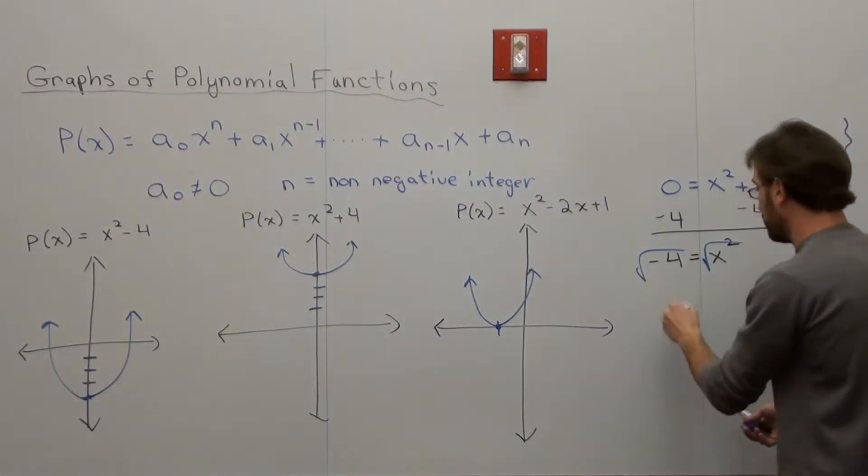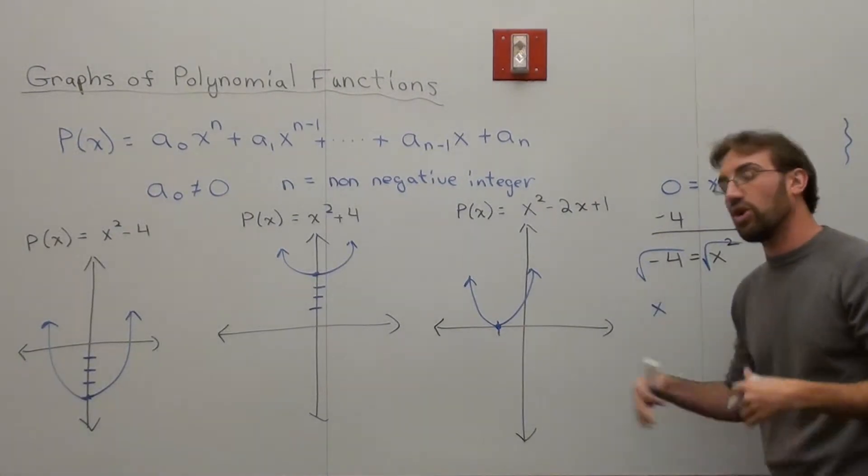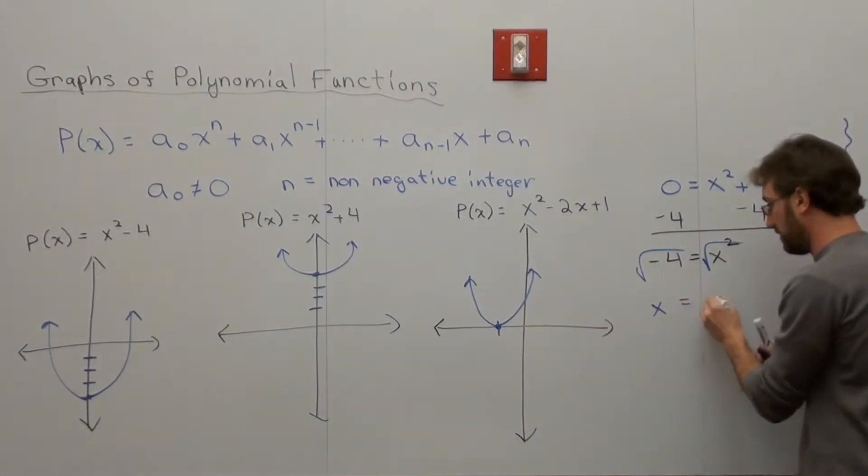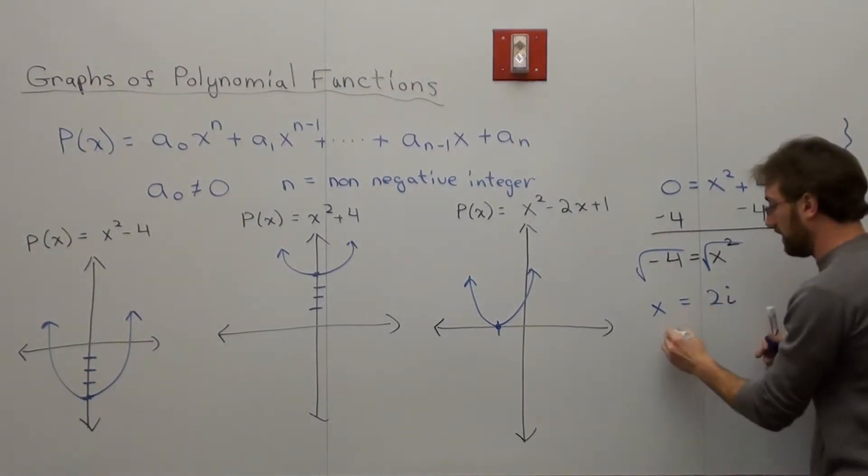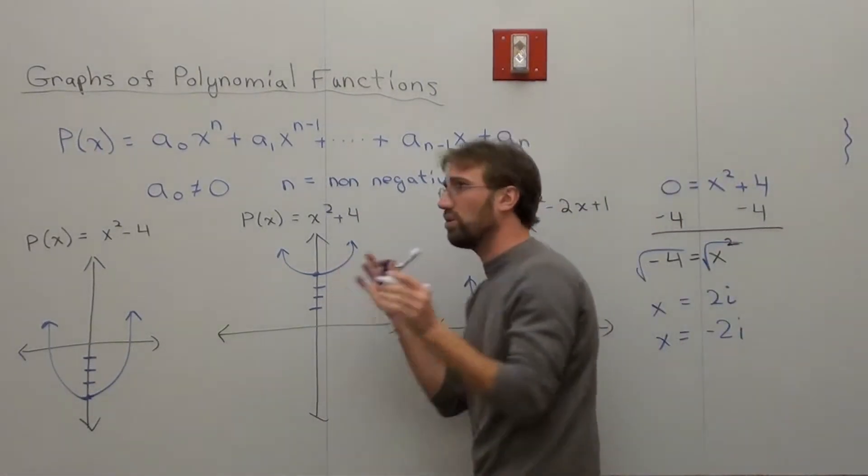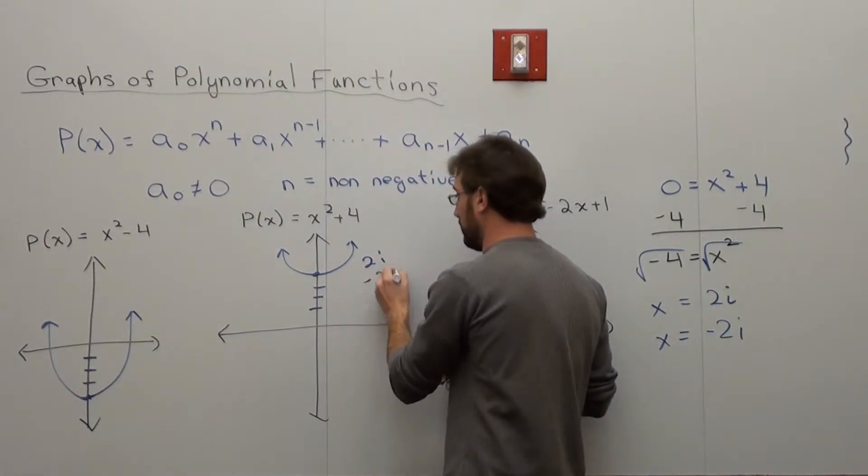So x equals square root of negative 4. It's not no real solution—you can't just do that anymore. It's 2i and negative 2i. Those are my answers. So I've got two imaginary roots at 2i and negative 2i.